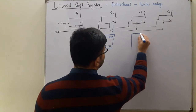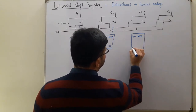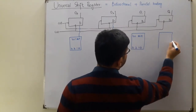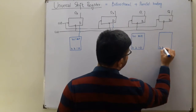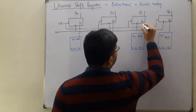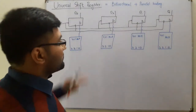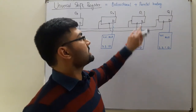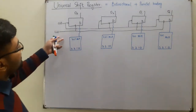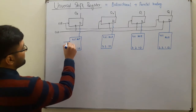Similarly, another 4x1 MUX with inputs 3, 2, 1, and 0 is connected to the third flip-flop, and likewise for the fourth. So in total, each 4x1 multiplexer has four inputs and one output, with that output going to the D input of the flip-flop. The multiplexers also have select lines.